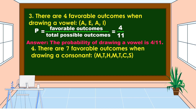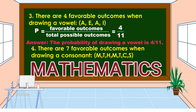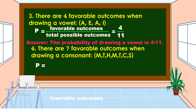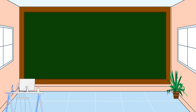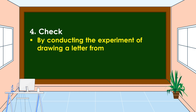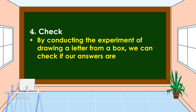For the last question, there are seven favorable outcomes when drawing a consonant. The consonant letters in the word mathematics are M, T, H, M, T, C, S. Using the formula P equals favorable outcomes over total possible outcomes, the favorable outcomes is 7 and the total possible outcomes is 11. Therefore, the probability of drawing a consonant is 7 over 11. The last step is to check — by conducting the experiment of drawing a letter from the box, we can check if our answers are correct.